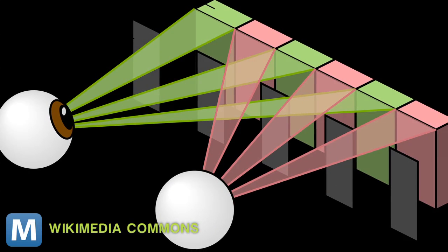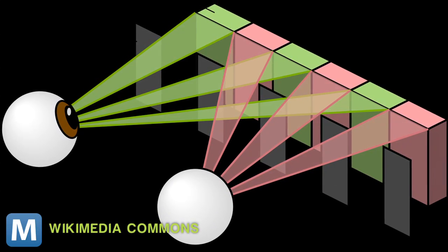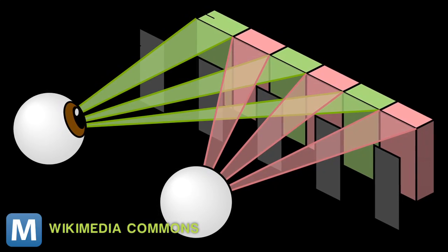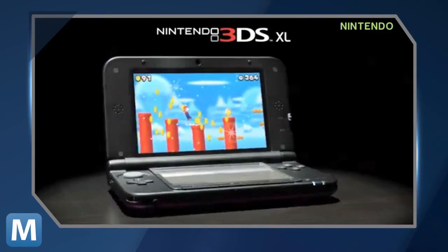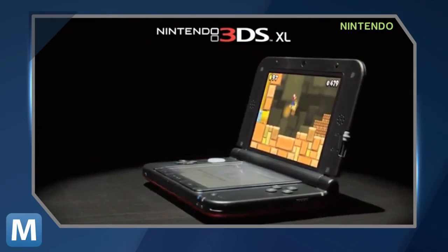And the parallax barrier method, which uses a device placed in front of the screen that allows each eye to see a different set of pixels. And if you've ever played a Nintendo 3DS, that's what's creating the effect.